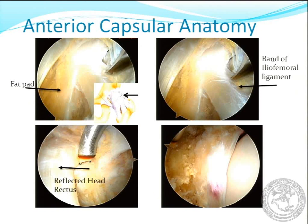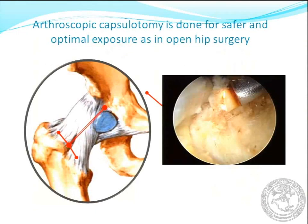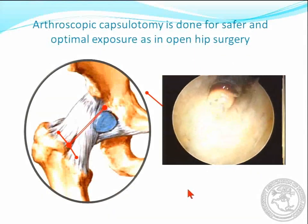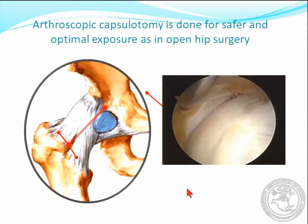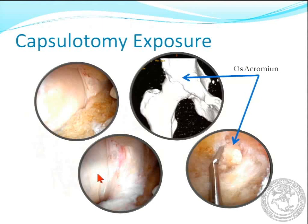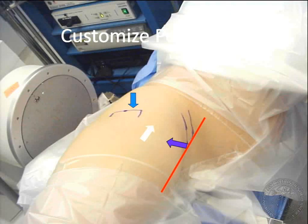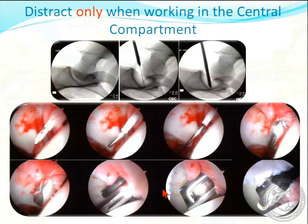For capsulotomy — this is an ideal sequence on a left hip. The fat pad is anterior, just like in a total hip. You see the band of the iliofemoral ligament, the rectus head — once we see the rectus head, we no longer need fluoro. Then we can get into the hip because the labrum is directly below it. This is just an old transverse capsulotomy, a 20-second version of about a five-minute procedure, to expose the head and labrum so you can distract the hip without damaging it going in blindly. Always consider capsulotomy, especially in revisions. Customize your portals — these are the three portals we tend to use today; only distract when you're working in the central compartment. If you're not working centrally, let down distraction and you'll reduce your complications.